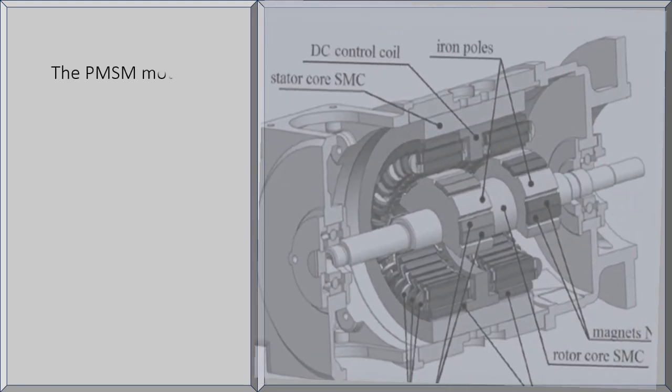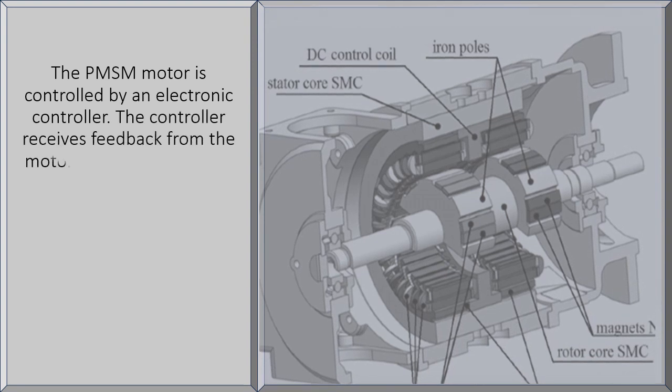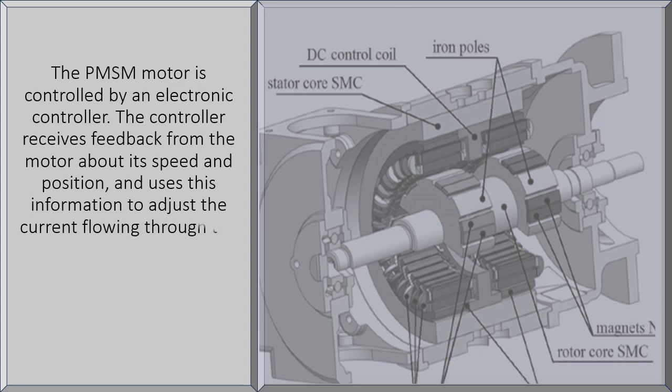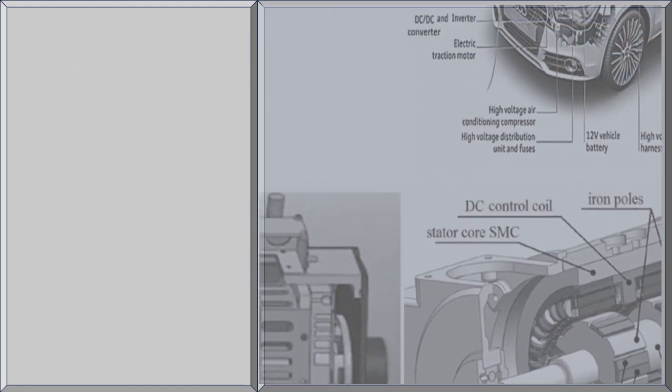The PMSM motor is controlled by an electronic controller. The controller receives feedback from the motor about its speed and position, and uses this information to adjust the current flowing through the stator coils. This ensures that the motor operates at the desired speed and torque.